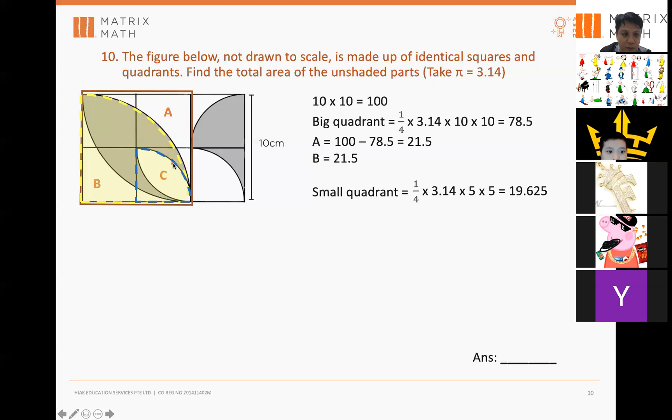From here to here, 5. So, this is the area of the small quadrant. Okay, you find the area of the quadrant. Then you take away the triangle here.